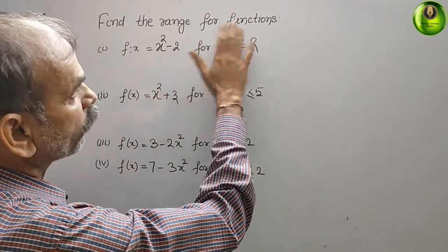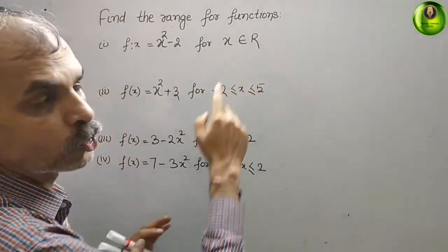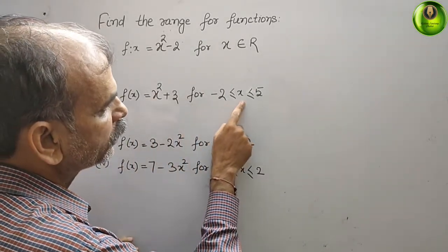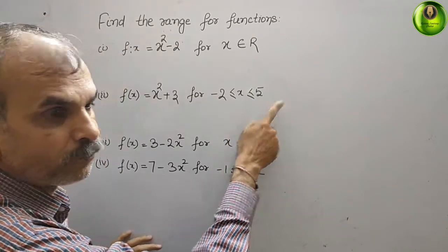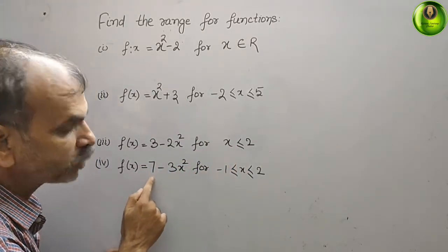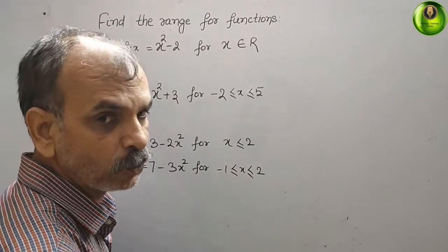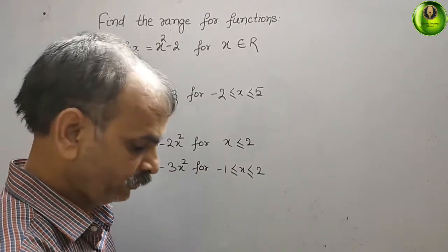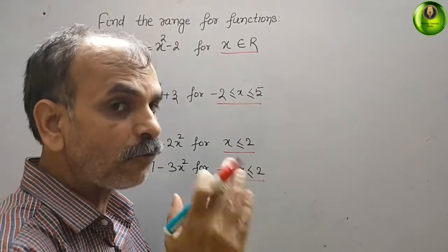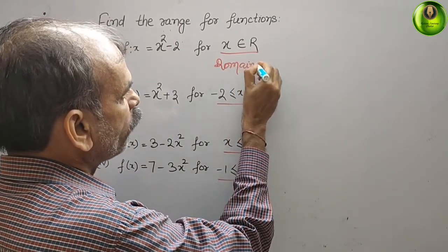The question is to find the range for functions. They have given: f(x) = x² - 2 for x belonging to real numbers; f(x) = x² + 3 for -2 ≤ x ≤ 5; f(x) = 3 - 2x² for x ≤ 2; and f(x) = 7 - 3x² for -1 ≤ x ≤ 2. We have to find the range. Here you can see these are your domains — the values of x are your domain — and now we will go for the range one by one.